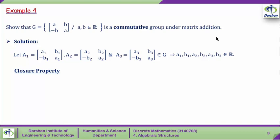To prove G is a commutative group under matrix addition, we need to prove five properties: closure property, associative property, existence of an identity element, existence of an inverse for each element of G, and commutative property. The first property is closure.